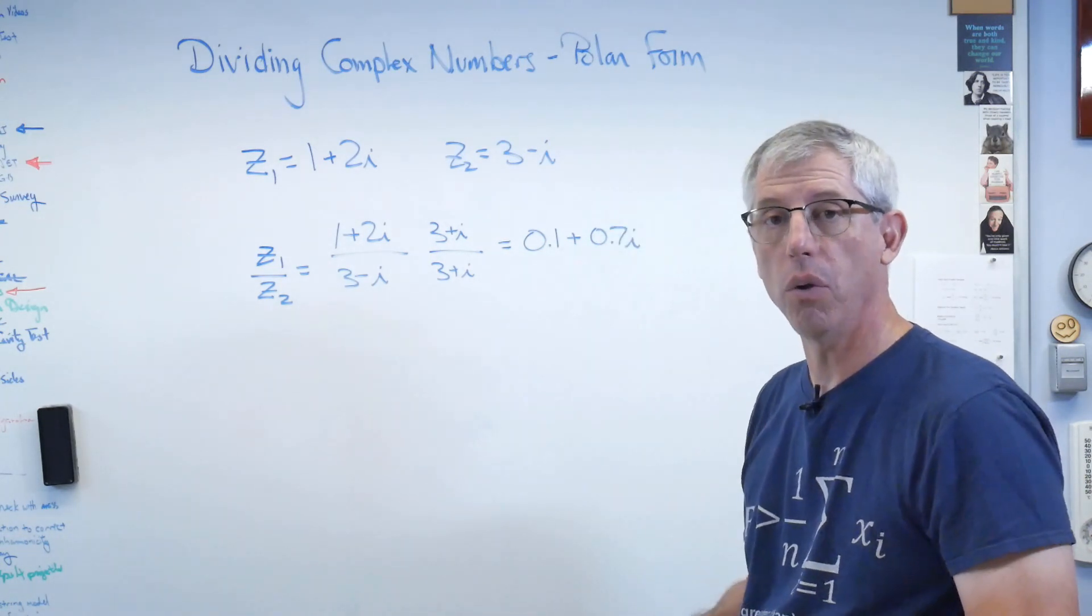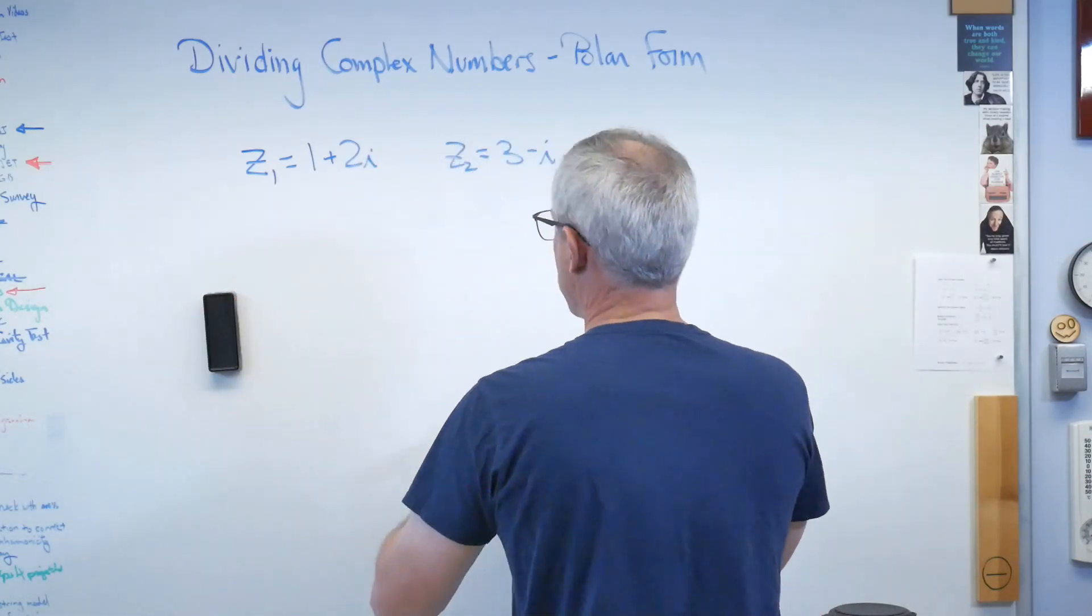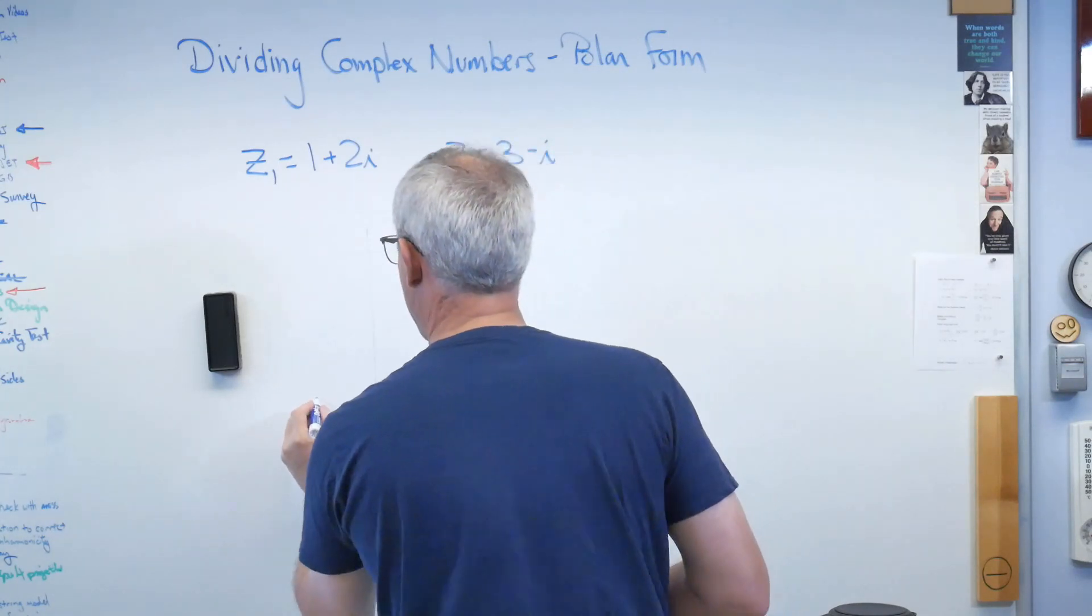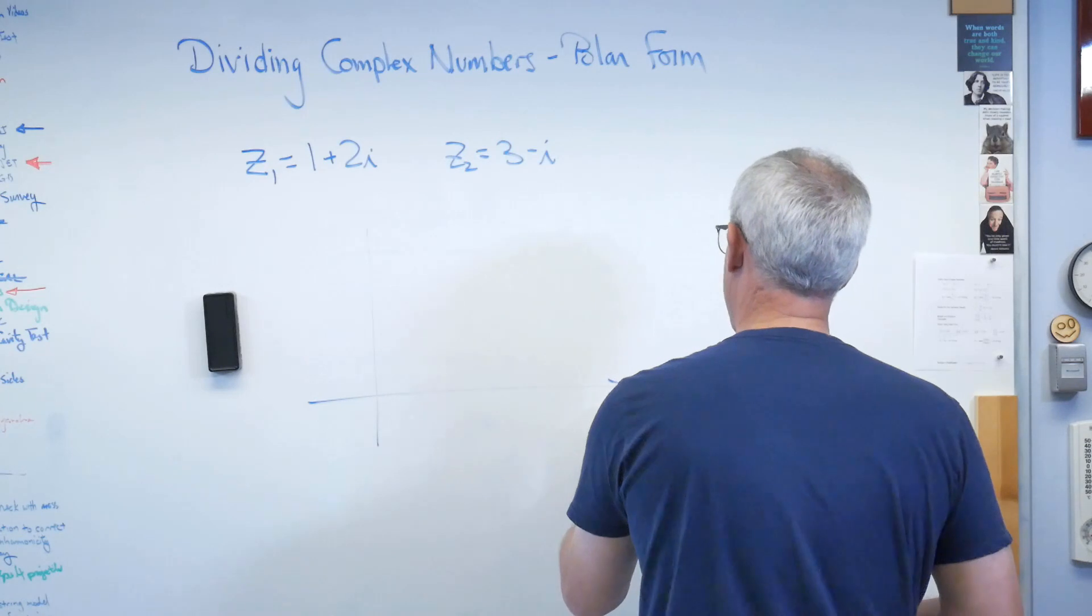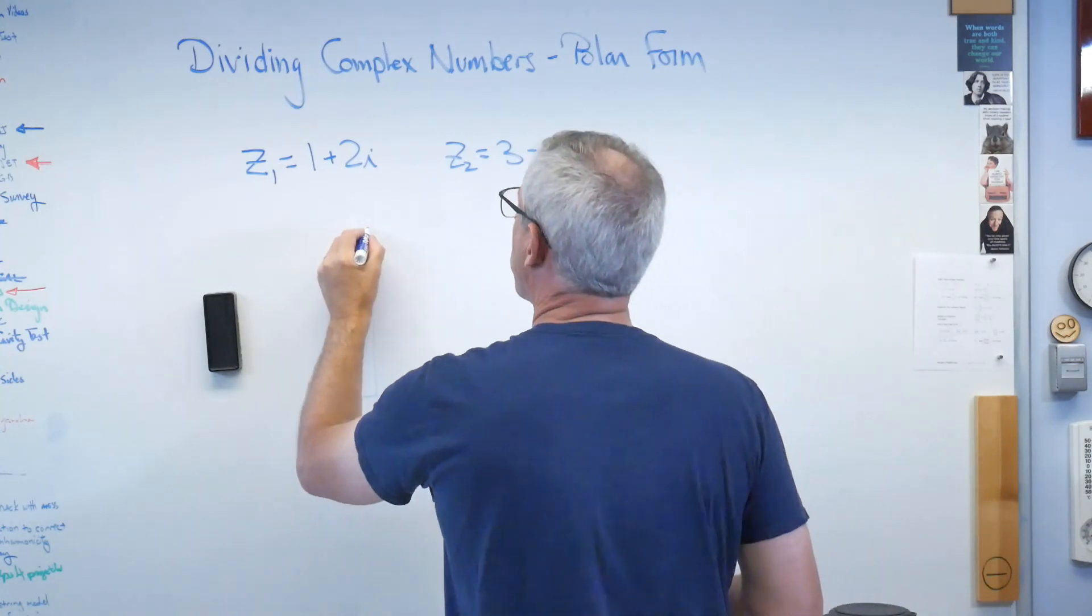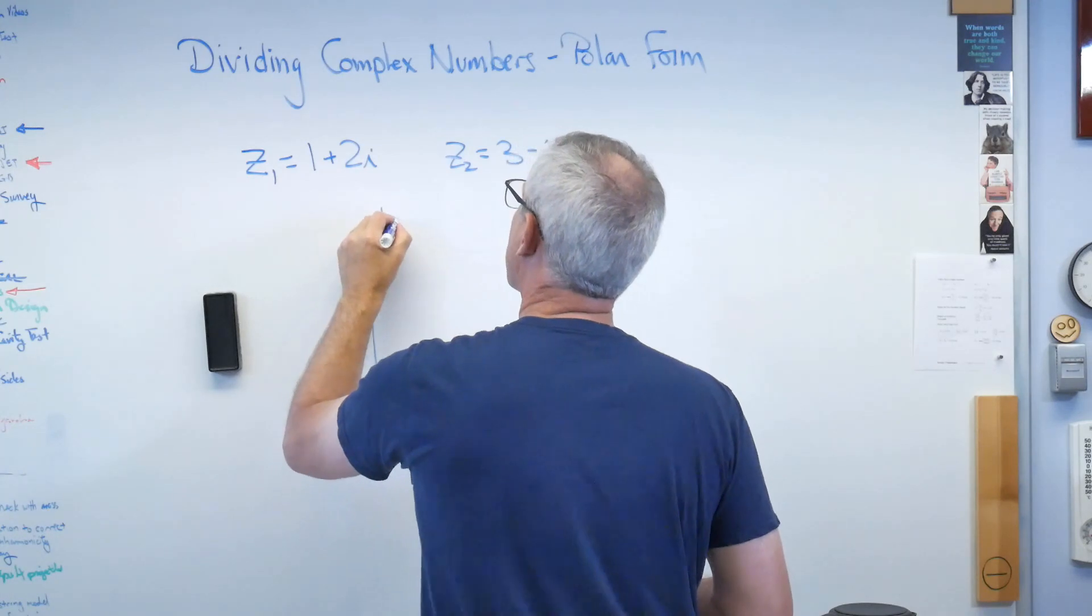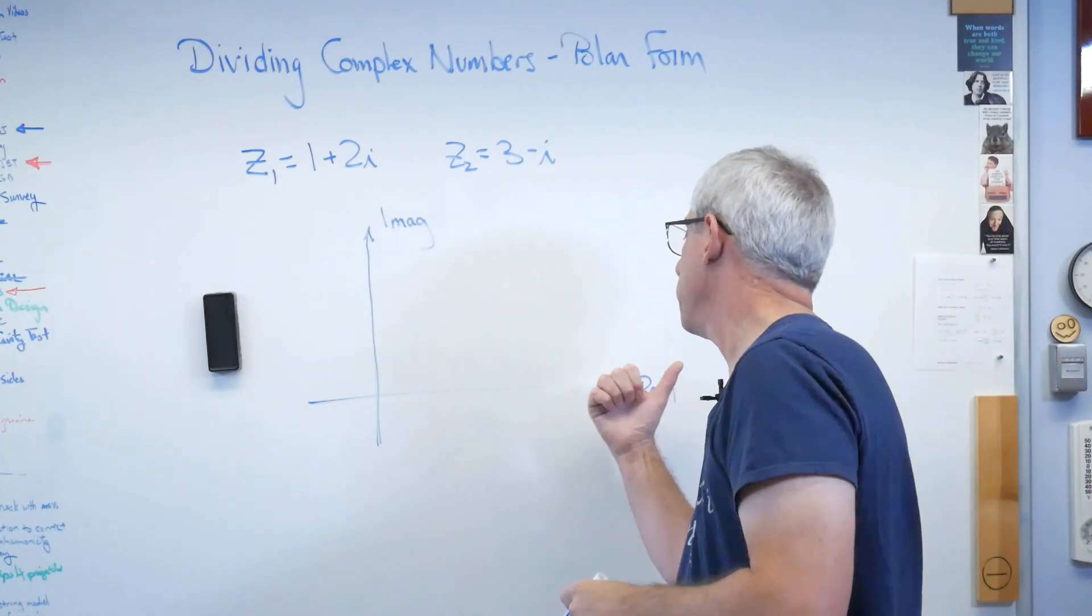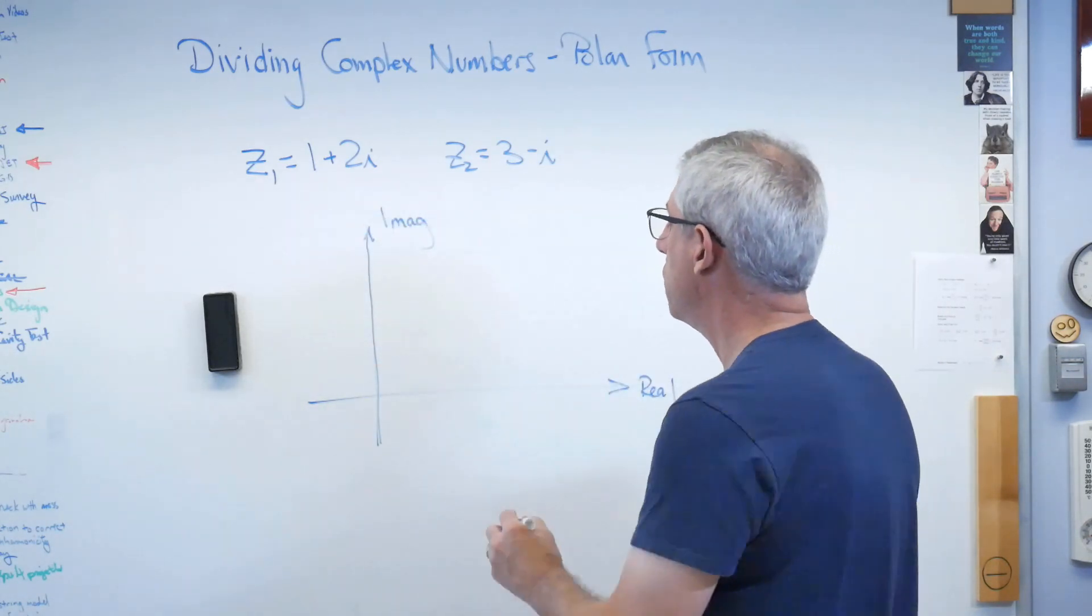Now, let's do this in polar form. In polar form, the idea here is, let's take this number. If I draw this on, let's see, the real, I'll get out of your way here in a second, just let me draw this.